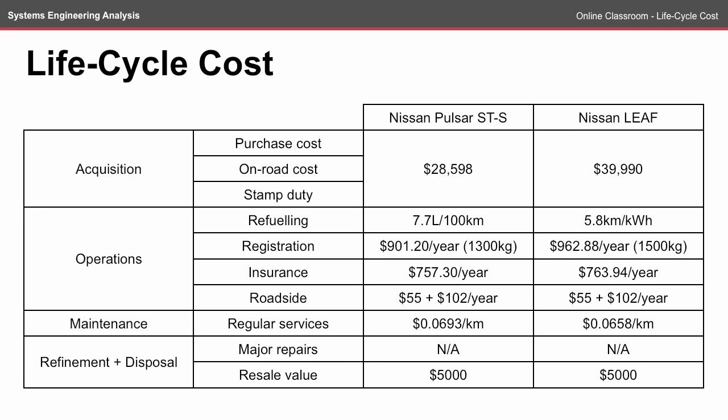If we go about constructing a table of all of the costs over the vehicle's lifetime, we end up doing quite a lot of research to find values to put into each of the cells. One interesting comparison is the price of the acquisition costs, which have been quoted with the purchase, on-road and stamp duty all included. The Nissan Leaf is significantly more expensive than the Nissan Pulsar, and it is said it's because of the high cost of the batteries.